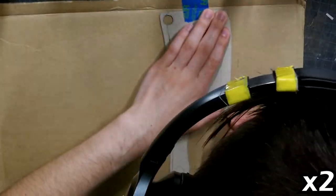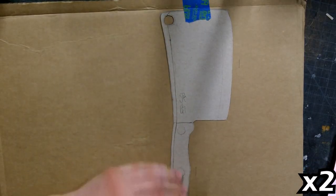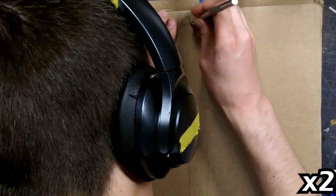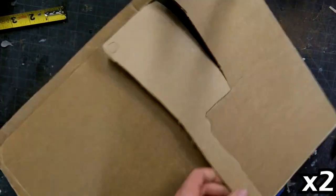I used that to trace it onto some thicker cardboard and I did make the blade just a little bit smaller so I could give it a nice sharp edge later. And I cut it out with a box cutter and X-Acto knife.